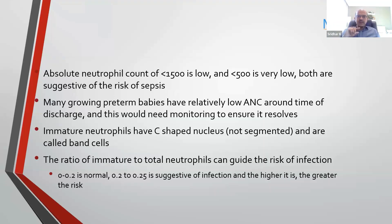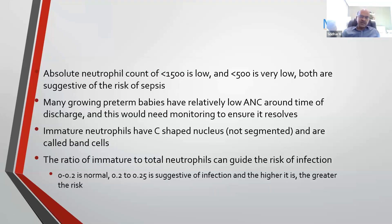An absolute neutrophil count of less than 1,500 is low, and both are associated with the risk of sepsis. Many growing premature babies have a relatively low absolute neutrophil count around the time of discharge — around 26 to 34-35 weeks — which often picks up on its own. If the baby is clinically well, you don't need to treat them for sepsis, but warn the parents and monitor. You can discharge them and review the count after a week. If it's very low, below 100, you wouldn't discharge them.